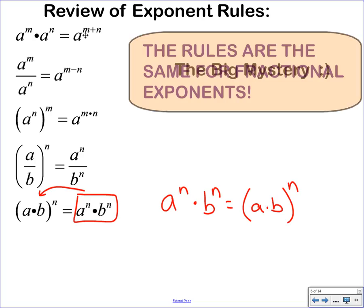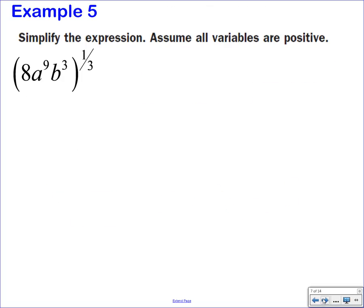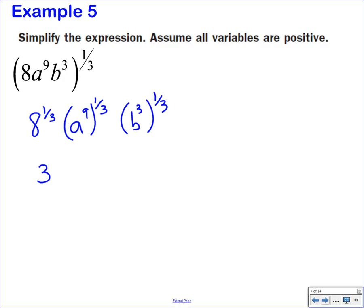These rules are the same for fractional exponents. So here I can distribute the 1/3 to everything — don't forget to distribute it to the number. The cube root of 8 is 2. Then a to the 9th to the 1/3: multiply the exponents to get a to the 3rd. And b to the 3rd to the 1/3 gives b. So the answer is 2a³b.